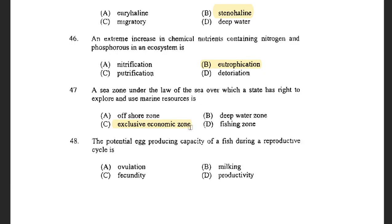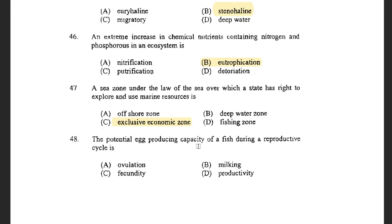Next question: The potential egg-producing capacity of a fish during a reproductive cycle is known as — options are ovulation, milking, fecundity, and productivity. The answer is fecundity. Fecundity is the egg-producing capacity of the fish.